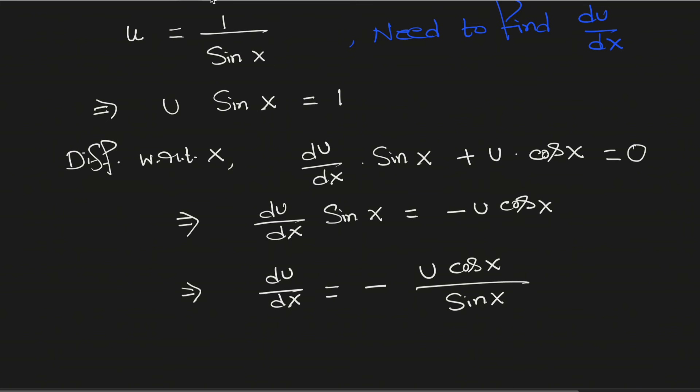As u is equal to 1 over sin x, this will be equal to negative cos x divided by sin square x.